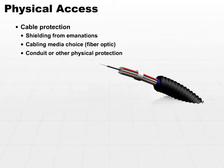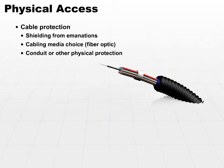That's a little bit different from the emanation issue. Emanation control is trying to keep the contents of what's going through the cable from getting out. Conduit is trying to keep any damage that may exist around the cable from actually affecting the cable. So the conduit is protecting the cable, whereas the shielding is trying to protect the actual data going through the cable.